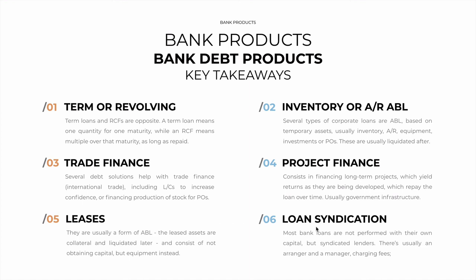And finally, loans are usually syndicated. Most bank loans are not performed with the bank's own capital, but instead by syndicated lenders — usually private debt investors. There is usually an arranger and a manager that may be the same or not, and which both charge fees for finding and managing the deal, respectively. So, bank debt products are usually senior, secured, and they always use instruments that are above investment grade. And when targeted at corporations, they usually have a specific purpose, such as financing trade, inventory, or others.